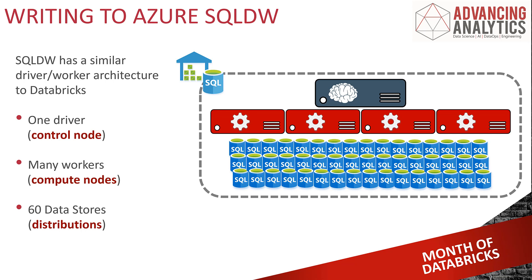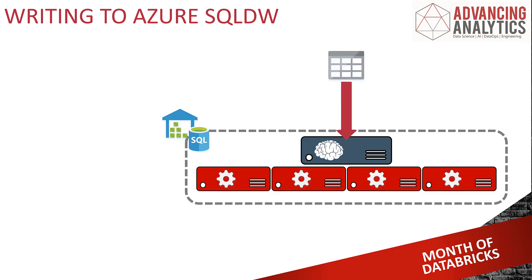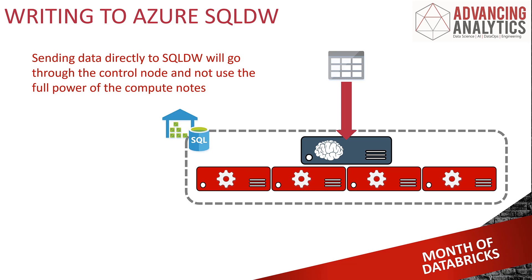So when we're trying to get data into the warehouse, what actually happens? If we're using any traditional way of inserting data — using BCP, using SSIS — it's going to hit the control node. Any attempts to just regularly insert data go through the control node at the top, which means they get bottlenecked. We don't take advantage of all the parallelism of all those different compute nodes. So it doesn't matter how much we've scaled it up if it's always going in through that front door, through that control node.